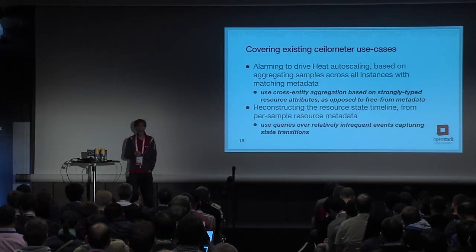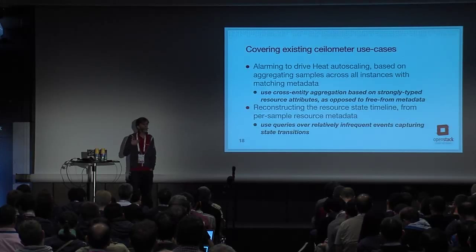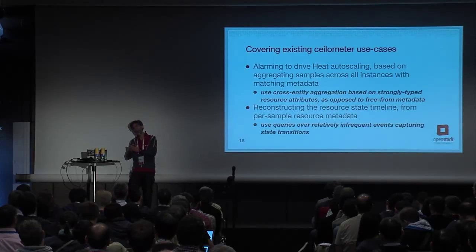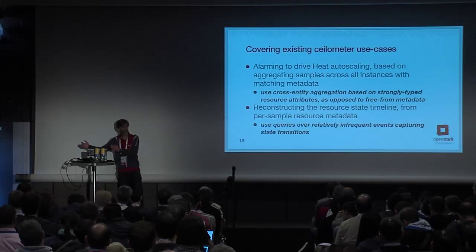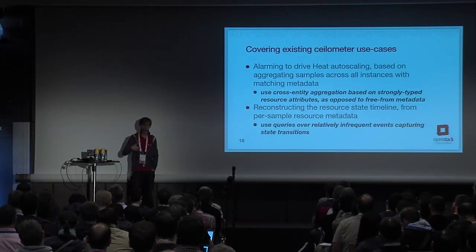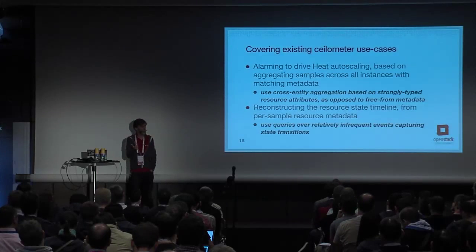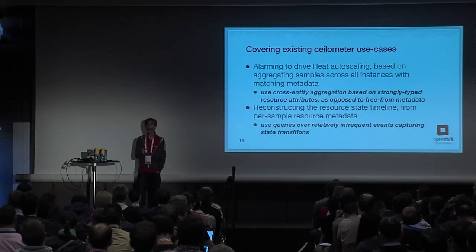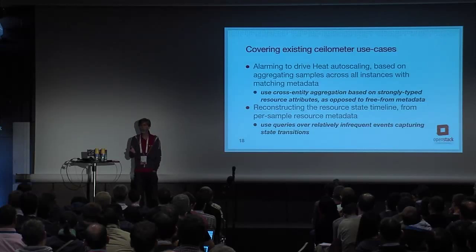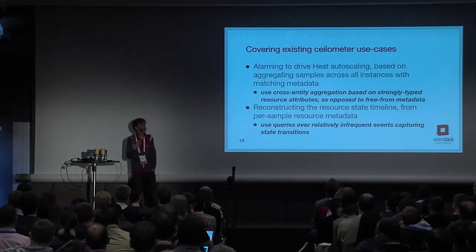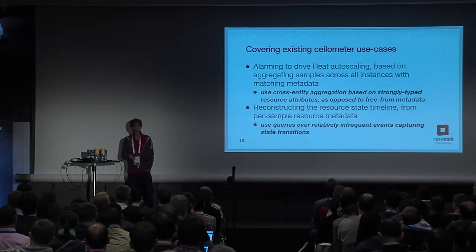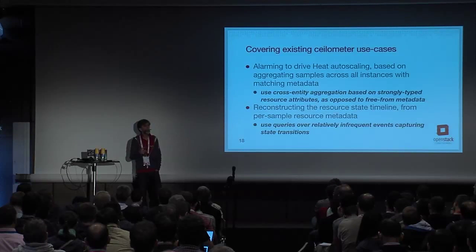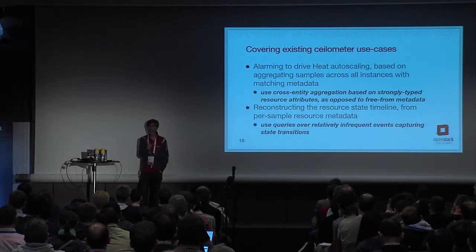Another common use case in Ceilometer that depends on heavyweight samples is reconstructing the resource state timeline — taking a particular instance and looking at spans of time when it was active, suspended, then resumed again. You can reconstruct major lifecycle events directly from sample data. As it happens, these events are generally quite infrequent. How often do you actually resize an instance? Not often. How often do you suspend it? Many instances are never resized in their lifetime. So it's much cheaper to actually store the events that represent those state transitions rather than continually snapshotting data that is either static or very infrequently changing.